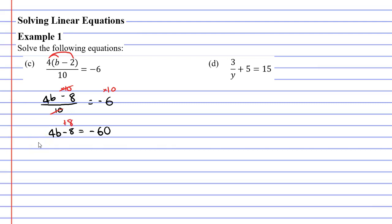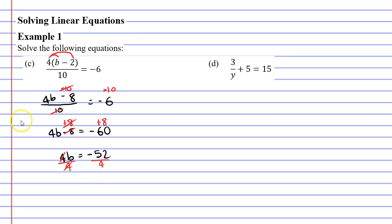Next, I'm going to add 8 to both sides of the equal sign to cancel out the minus 8, leaving us with 4B on the left. And negative 60 plus 8 is negative 52. Next, I'd like to divide by 4 — I prefer writing it as a fraction over 4 rather than 'divide 4', as it's the same as dividing by 4. Cancelling the 4 leaves us with B, and negative 52 divided by 4 gives us negative 13.